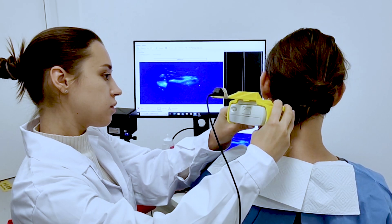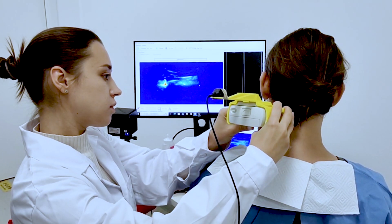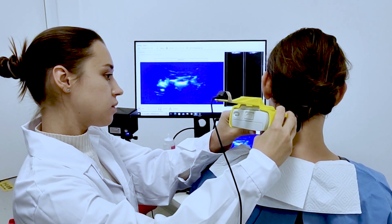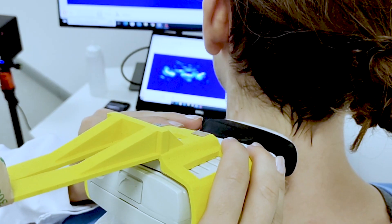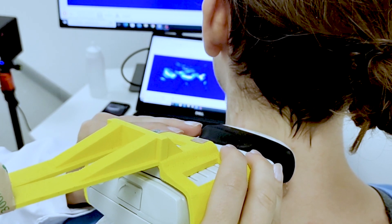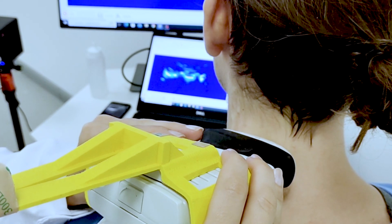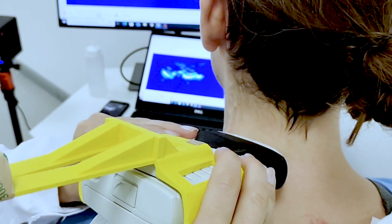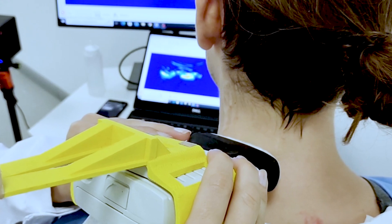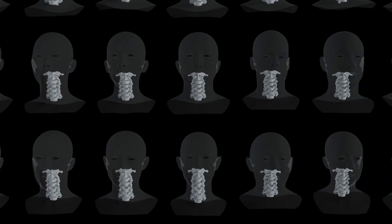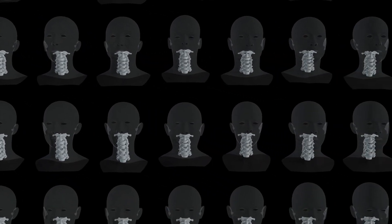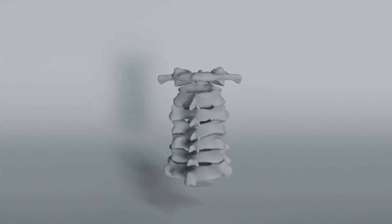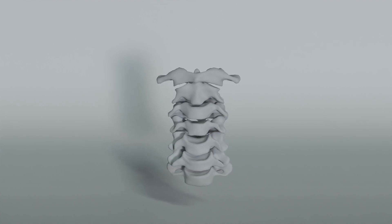To train the HACC model, we need a comprehensive dataset. To create the dataset, we use a portable real-time 3D ultrasonic imaging system to capture anatomically accurate positions of the cervical spine, relative to the skin of performers in the rest pose using ultrasonic tomography.